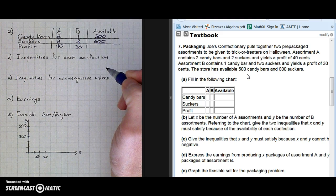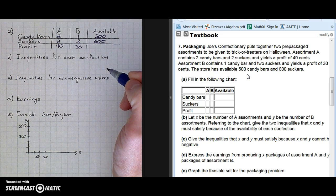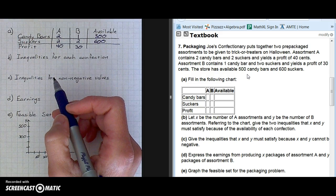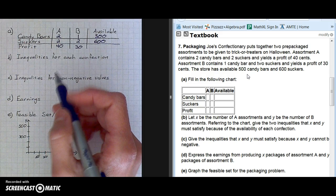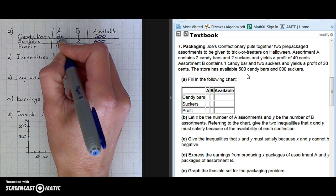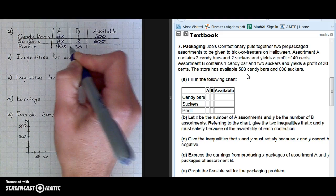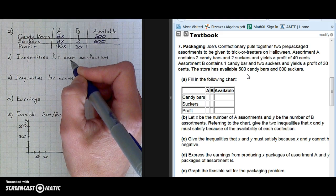Part A is finished. It will help us come to Part B. Let X be the number of A assortments. That means where we have assortment A, we're going to be using variable X. And Y be the number of B assortments.